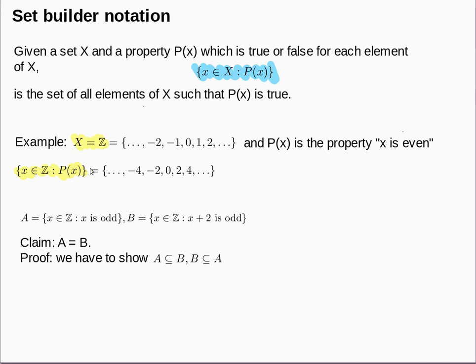I'm going to end the lecture by giving part of an example of how we prove sets are equal. Recall that two sets A and B are equal if and only if A ⊆ B and B ⊆ A. We prove sets are equal by checking first that one is a subset of the other, then checking the reverse. In our example, A is the set of all odd integers and B is the set of all integers x such that x + 2 is odd — both examples of set builder notation. In fact, A and B are equal.